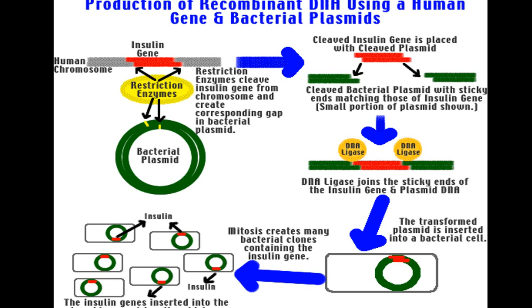I am going to explain this image so that you can understand the entire rDNA technology. This slide is mainly showing the production of recombinant DNA using a human gene and bacterial plasmids. In rDNA technology, we are going to use the gene or DNA from two different species.